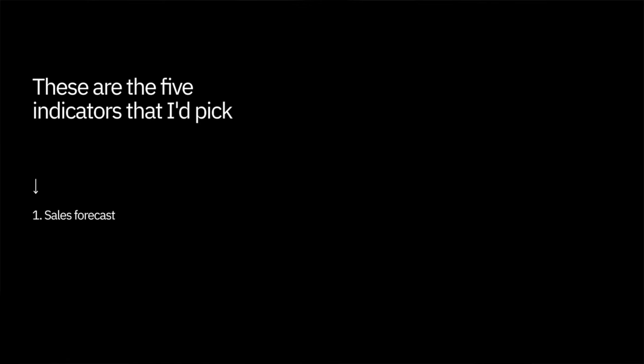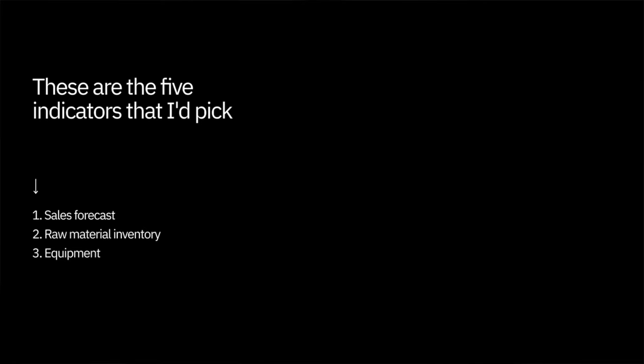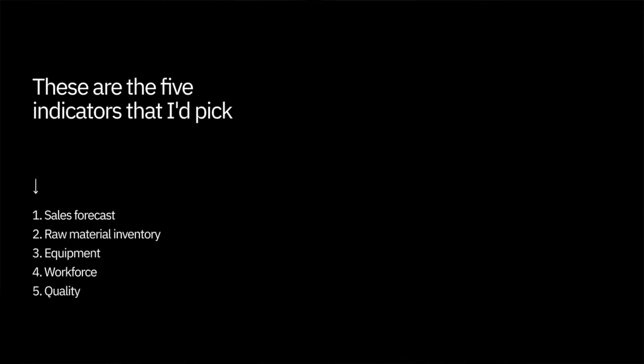These are the five indicators that I'd pick. One, sales forecast: how many breakfasts should you plan to deliver? Measure the variance between breakfast delivered versus forecasted. Two, raw material inventory: do you have enough eggs, bread, and coffee to get through the day? Have too much? Cancel today's order. Too little? Order more. Three, equipment: does anything need repair or replacement? If so, rearrange the production flow or lower your forecast. Four, workforce: are all your staff there? Do you need to move someone from making coffee to toasting bread? And five, quality: you need to know what customers think. There's no point doubling the number of breakfasts sold if half of them don't meet the mark.